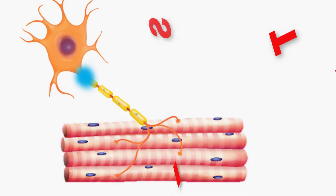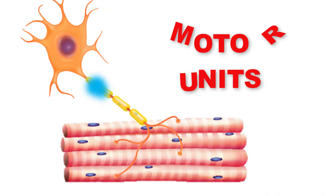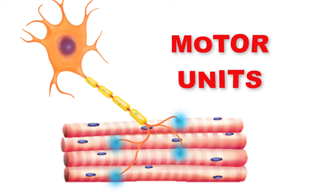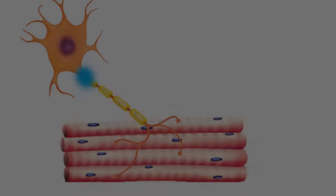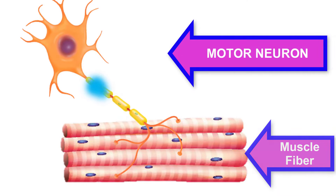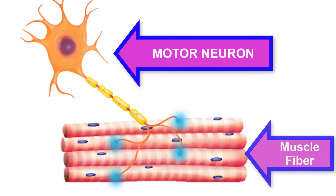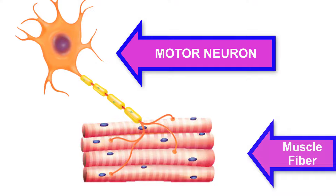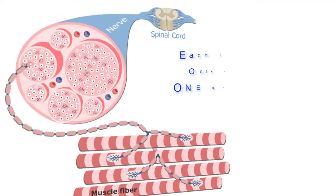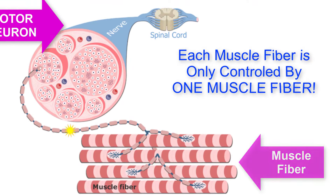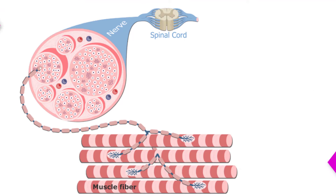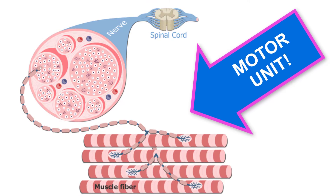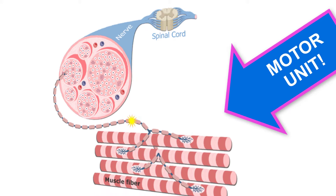A crucial aspect of nervous system control of skeletal muscles is the role of motor units. Every skeletal muscle fiber must be innervated by the axon terminal of a motor neuron in order to contract. Each muscle fiber is innervated by only one motor neuron. The actual group of muscle fibers in a muscle innervated by a single motor neuron is called a motor unit.